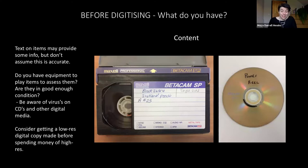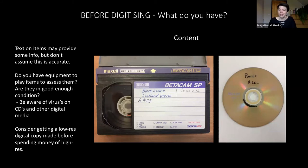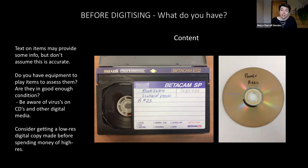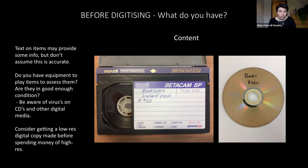With tape and disc carriers, it's a bit more tricky to identify what you have. Some items may have text on them, which can be useful, but don't assume this is accurate — VHS tapes can have been recorded over and over again. If you have equipment to play these items, you may decide you're happy with the risk of playing them to see what they contain. Do check that the equipment is in good condition and clean it if necessary. An alternative is to get a low resolution digital copy made, which will cost less than a high resolution transfer. I would try your absolute hardest to avoid digitising items if you don't know what's on them — you may spend a lot of money and time on material that isn't very useful to your organisation.